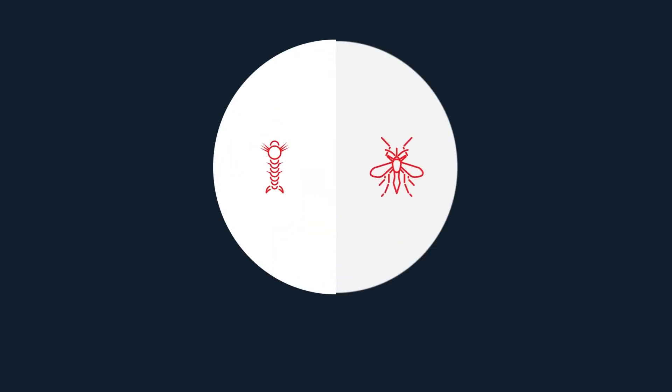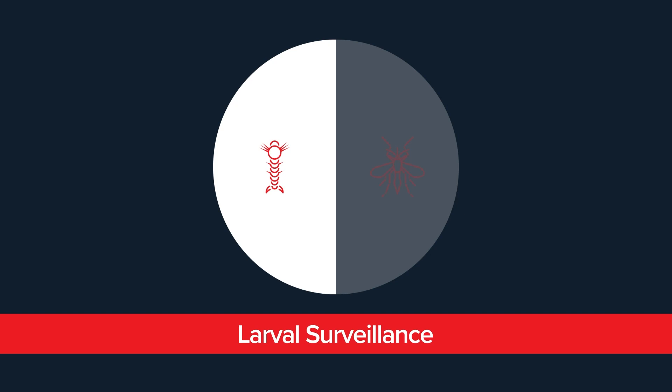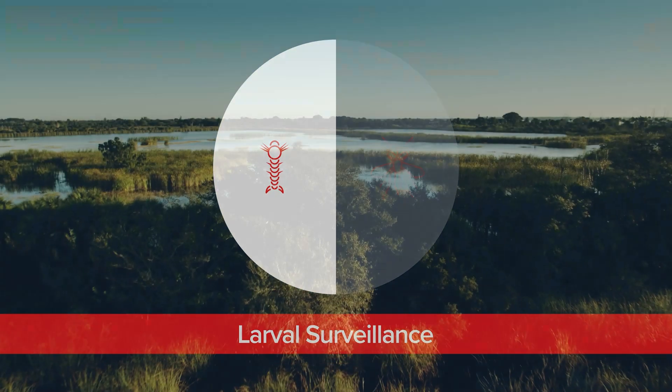There are two main categories of mosquito surveillance. The first, larval surveillance, reveals where mosquitoes breed and provides insight into species dynamics.